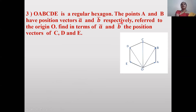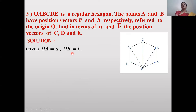Next problem: OABCDE is a regular hexagon. Points A and B have position vectors ā and b̄ respectively, referred to origin O. Find in terms of ā and b̄ the position vectors of C, D, and E. Given: OĀ = ā, OB̄ = b̄.